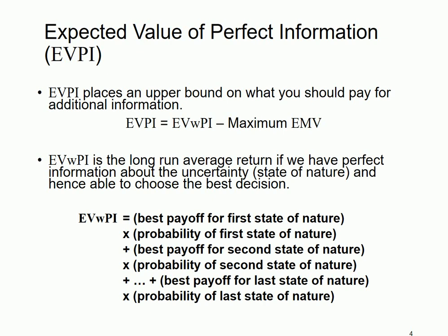EVPI has a formula: it's the difference between something called EVWPI and the maximum EMV from all of the alternatives. The second term we have already derived in the previous example. The first term, EVWPI, is the long-run average return if you have perfect information before you make the decision. Its formula is the sum of the best payoff in each possible outcome times the probability of that possible outcome.